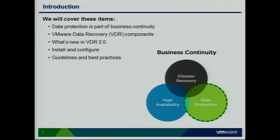Here are the items we're going to cover today. In my opinion, from a technical standpoint, there are really three facets to business continuity in the IT space: disaster recovery, high availability, and data protection. We can have all the availability and disaster recovery built into an environment, but if we have no way of protecting our data — backing it up — it's not going to do us much good.